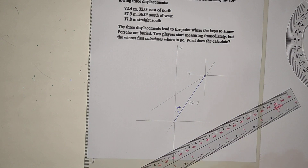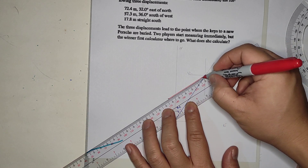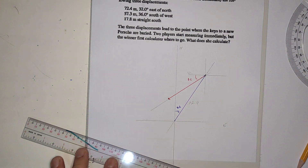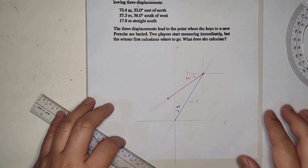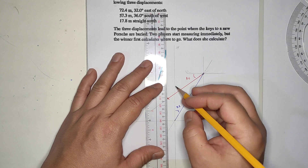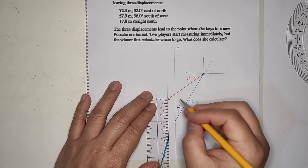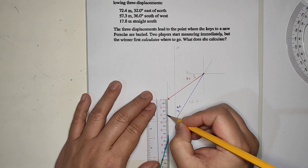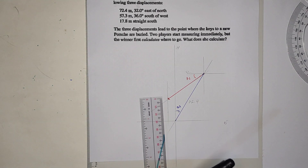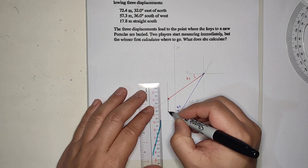For the next displacement, he traveled that way — at 36 degrees. Then, 18 meters straight south, meaning it's vertical, going down. It's 17.8 meters, so 1.8 on our scale. Something like here. So this is the location of the key. The contestant traveled from here, goes there, goes down, and down. The other contestant measured the resultant — starting here, ending there. That's the resultant.